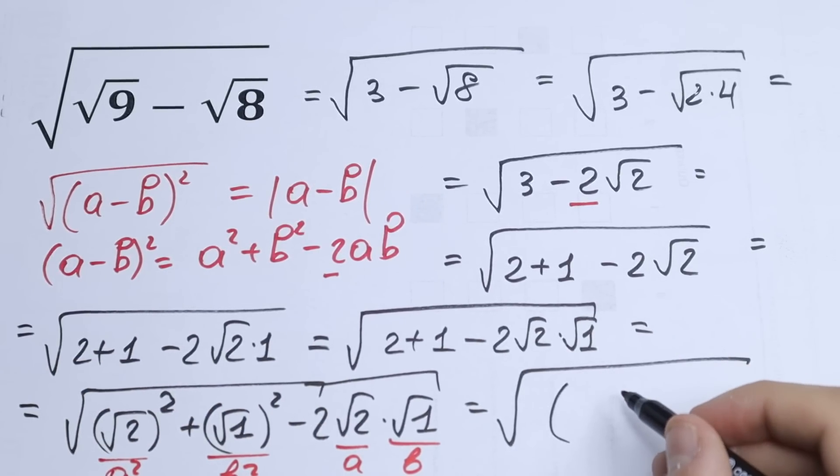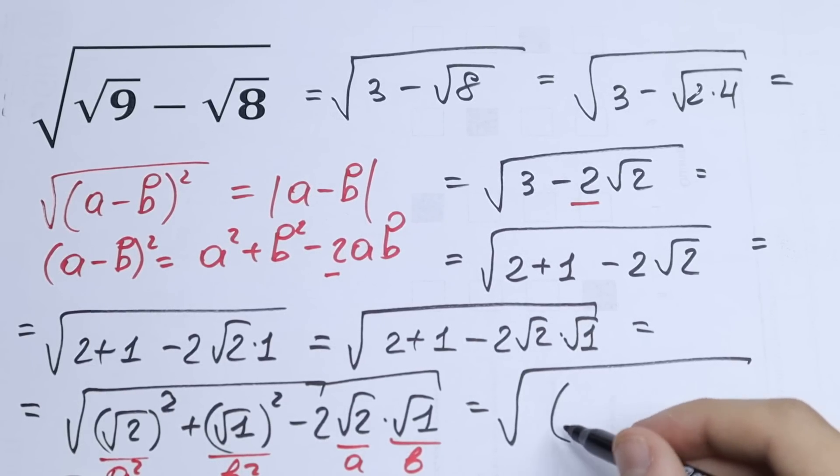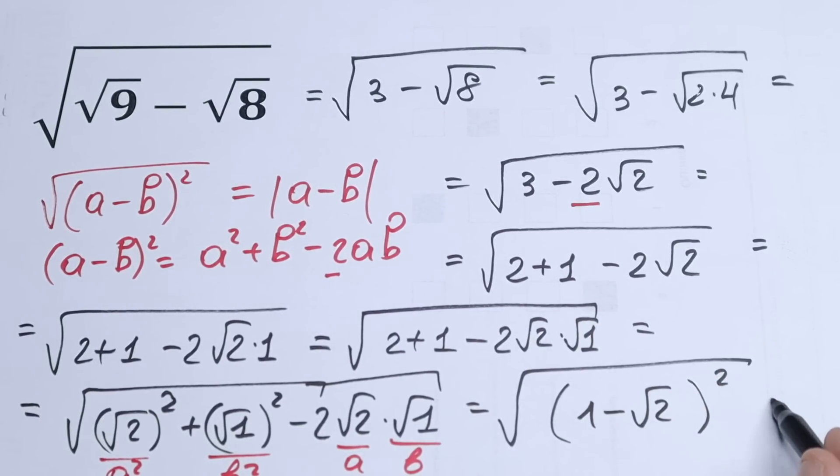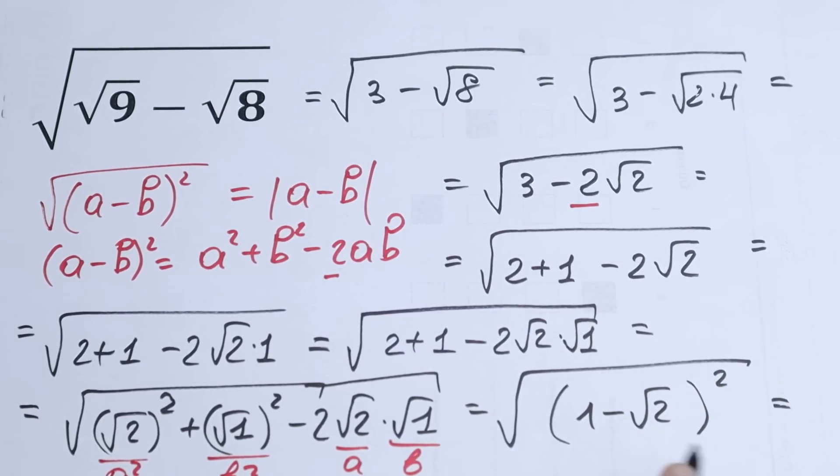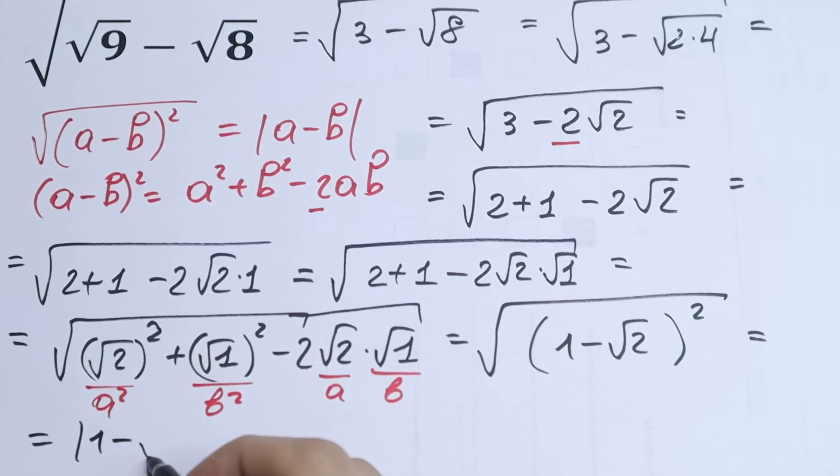And how is the formula looks like? Of course, (a - b)². So we will have √[(1 - √2)²]. Right here we will have square, and as a result we will have (1 - √2)². It will be equal to absolute value, of course. It will be equal to |1 - √2|.